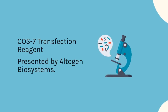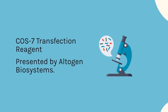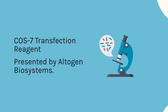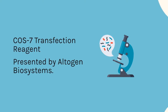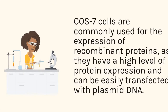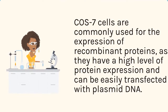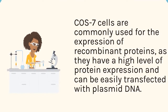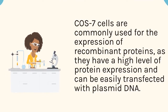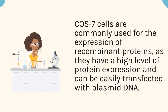CUS-7 Transfection Reagent, presented by Altogen Biosystems. CUS-7 cells are commonly used for the expression of recombinant proteins, as they have a high level of protein expression and can be easily transfected with plasmid DNA.